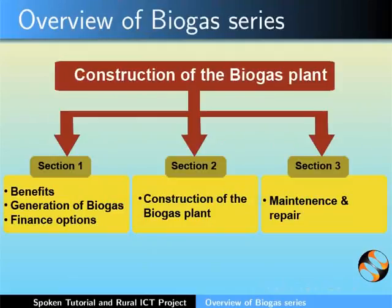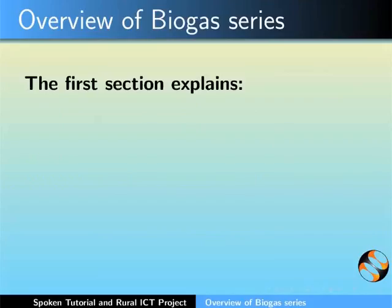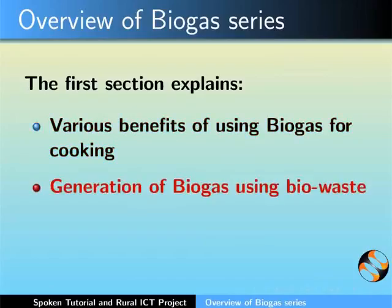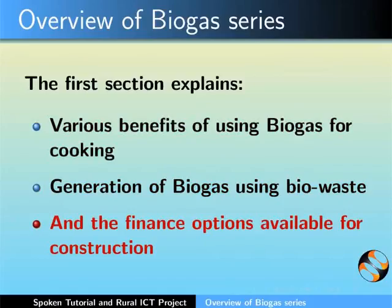This series can be segregated into three different sections. The first section explains the various benefits of using biogas for cooking, the generation of biogas using biowaste available in the house and farms, and the finance options available for the construction of a biogas plant.